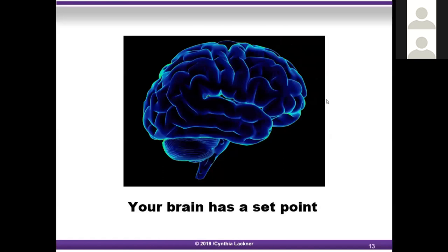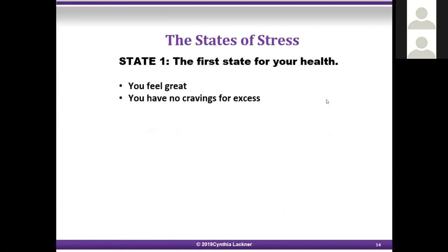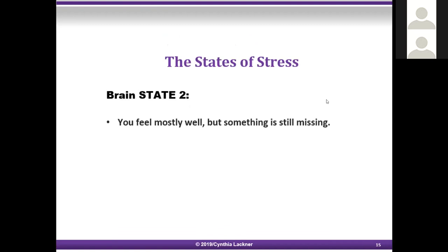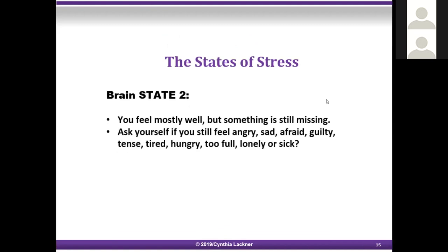Your brain has a set point, determined by all the experiences you've ever had in your life. The more you are in a certain brain state, the more the brain develops the habit of being in that state. Brain state one: you feel great, have no cravings for excess, you are creative, cooperative, loving, compassionate, full of energy, and healthy. Brain state two: you feel mostly well but something is still missing — ask yourself if you feel angry, sad, afraid, guilty, tense, tired, hungry, too full, lonely, or sick.